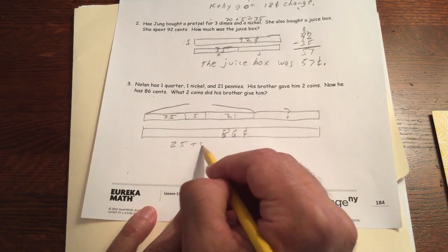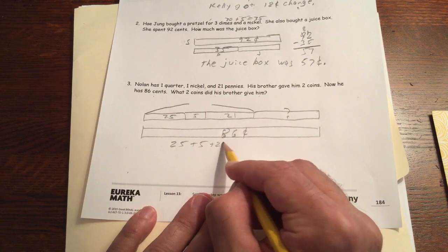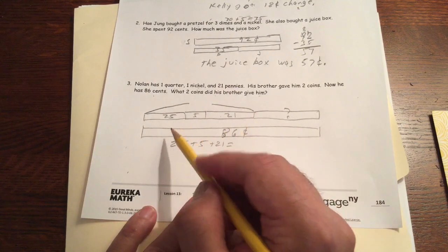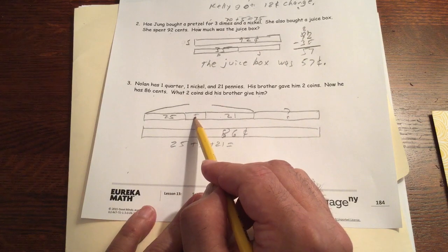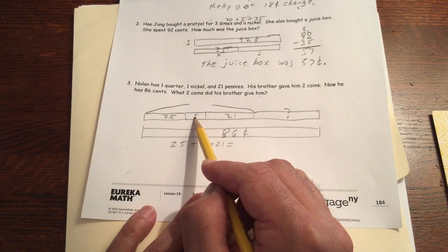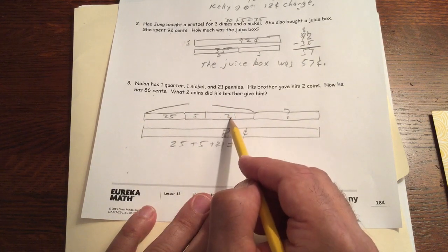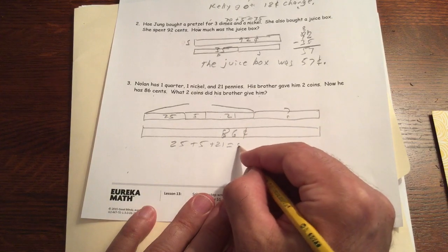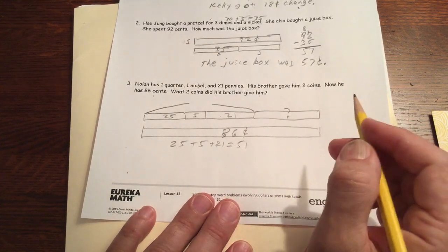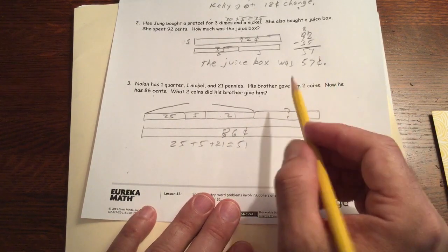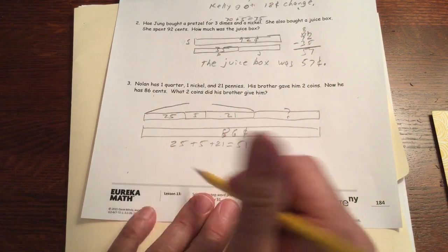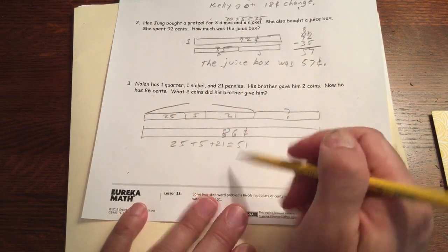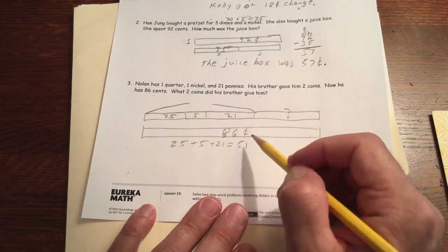25 plus 5 plus 21 equals, and you could probably do this mentally, the 25 and the 5 is 30, and think 30 plus 21 is going to be 51. You might be able to do that mentally or you can write it down, or you can add it all up vertically. There's a lot of different methods you could use to add that together. That's 51.